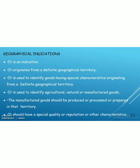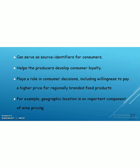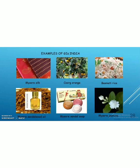Geographical indications are used to identify agricultural, natural, or manufactured goods. The manufactured goods should be produced, processed, or prepared in that particular territory and should have a special quality, reputation, or other characteristics. Benefits of geographical indications include: conferring legal protection, preventing unauthorized use of a registered geographical indication by others, promoting economic prosperity of producers in that territory, boosting exports, serving as source identifiers for customers, helping producers develop customer loyalty, and playing a role in consumer decision-making — consumers are ready to pay a higher price for regionally branded food products.